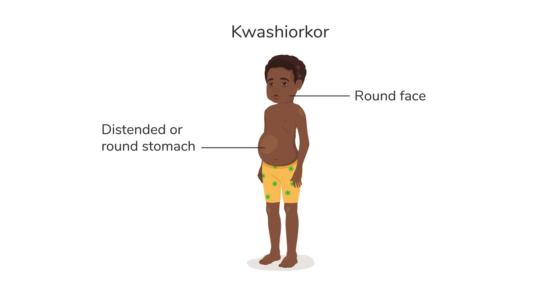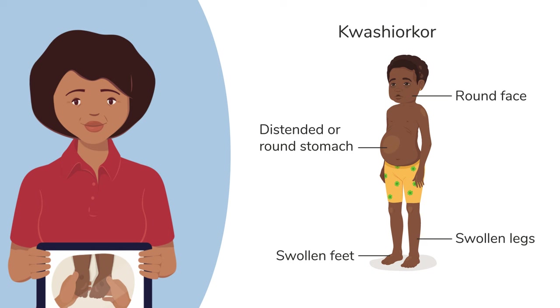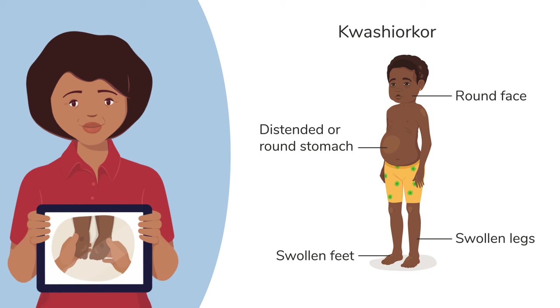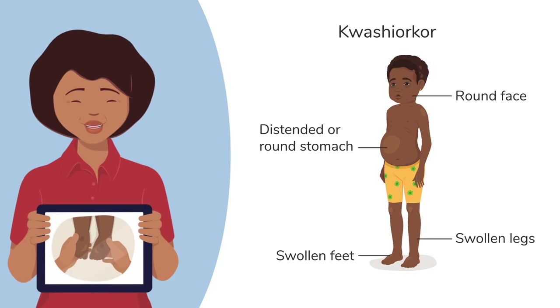Common signs of kwashiorkor are a round face and a distended or round stomach. Also, look out for swollen feet and legs. Another video will show you how to identify if the child may have kwashiorkor by checking for swelling of both feet.